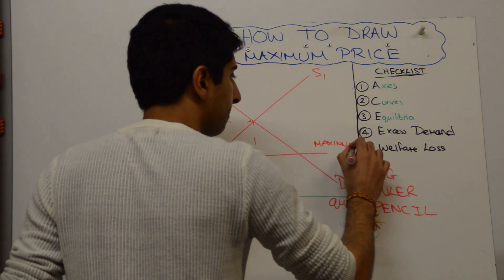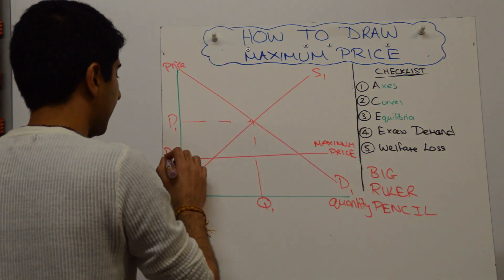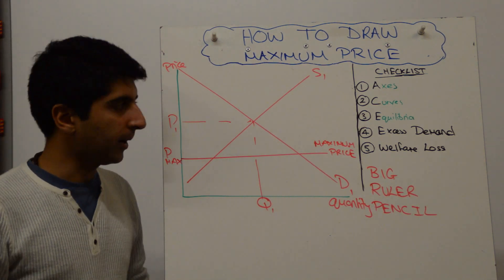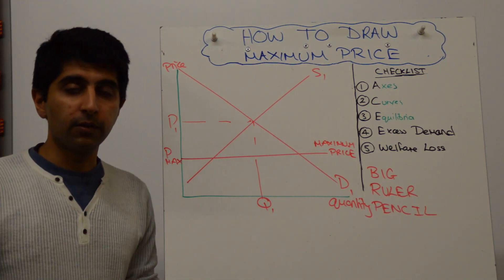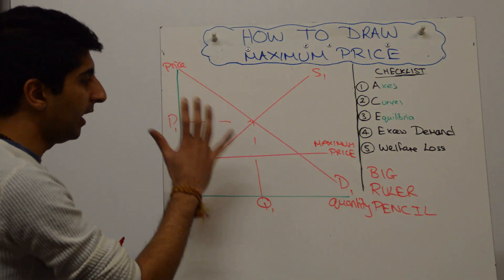So we can label this maximum price here. That is the maximum price. But certainly you have to label it here. All good habits. Don't rush ahead in diagrams. Always label as you go along. And always stop to make sure that you've not forgotten anything.